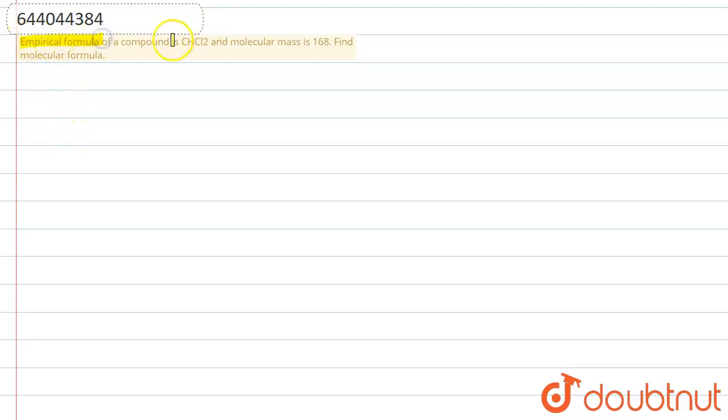Let me explain it to you. Empirical formula of a compound is CH Cl2 and the molecular mass is 168. Find the molecular formula.